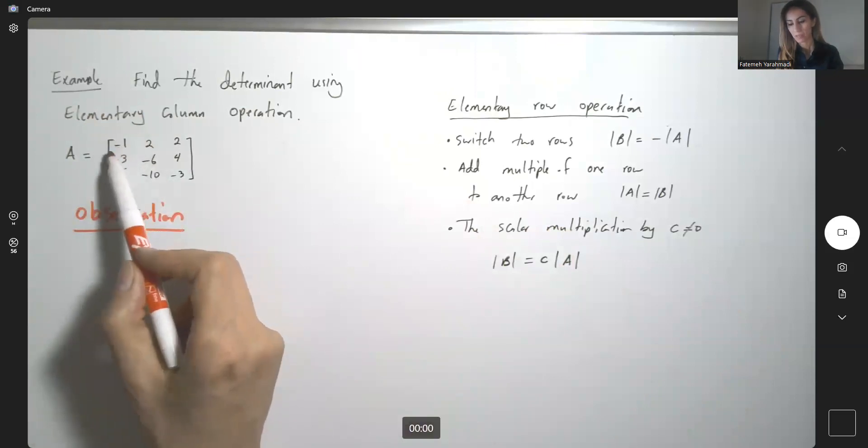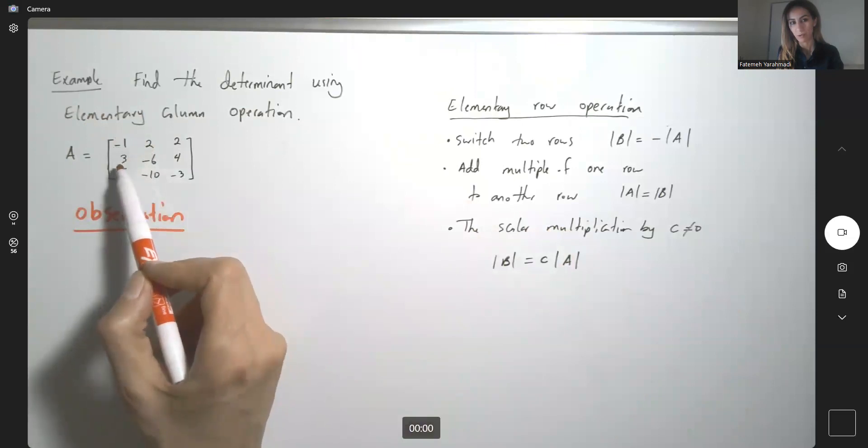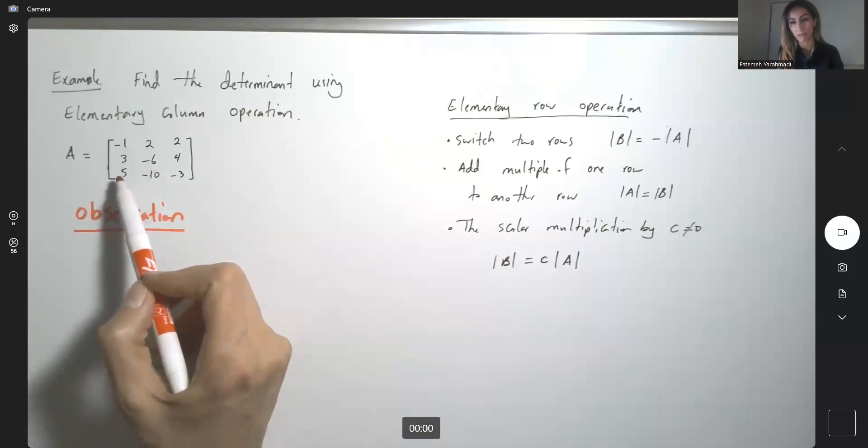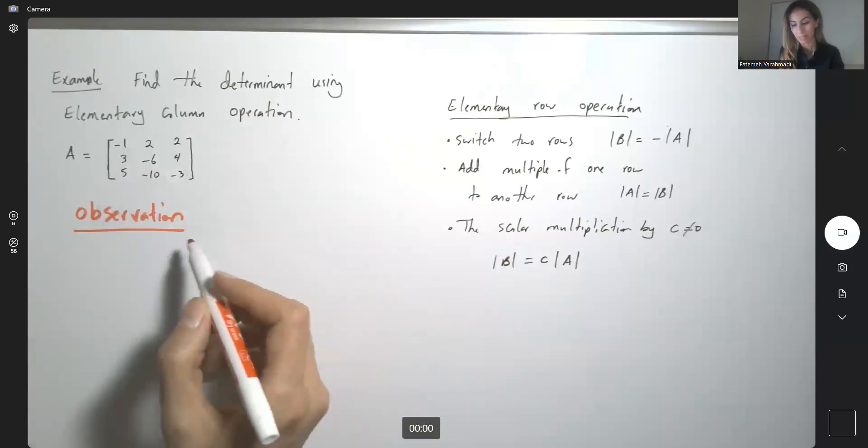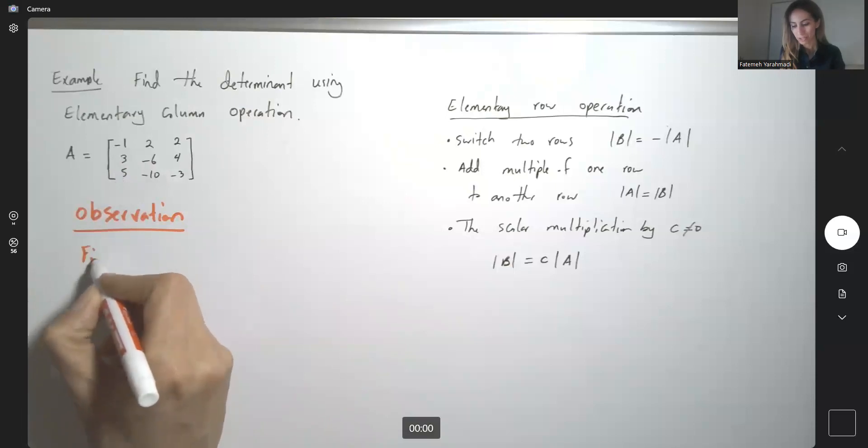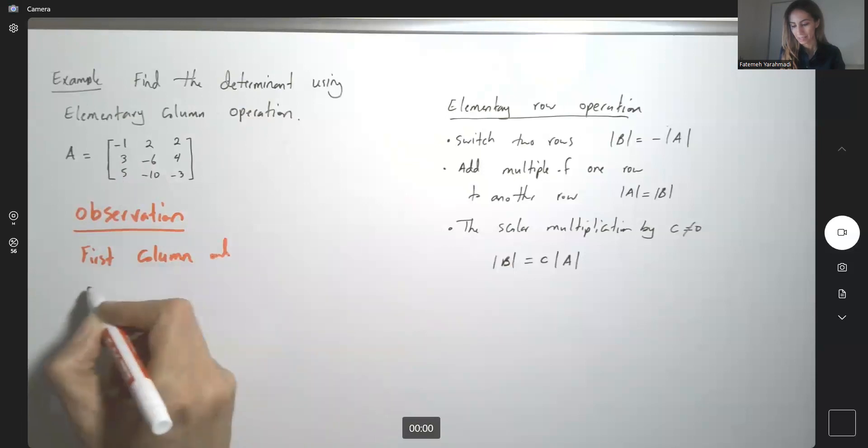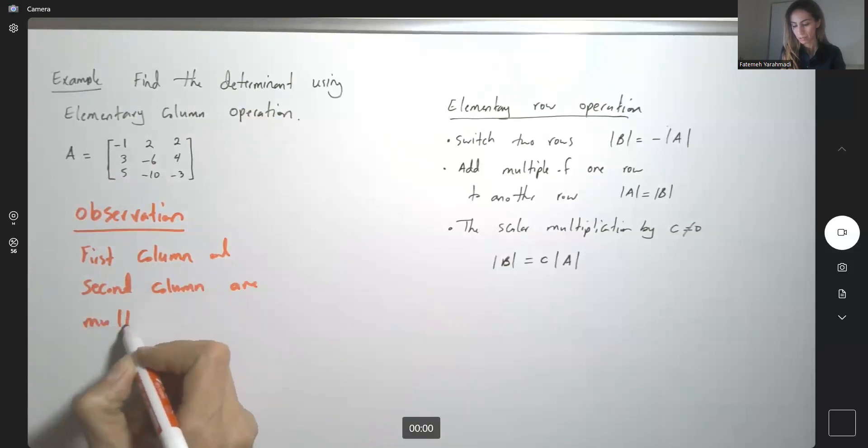If I multiply the very first element by negative 2, I get the second element here. Multiply 3 by negative 2, I get negative 6. Multiply 5 by negative 2, I get negative 10. So, you have an observation. First column and second column are multiples of each other.